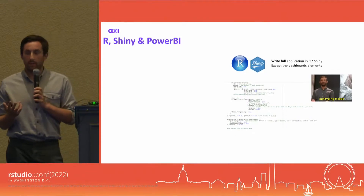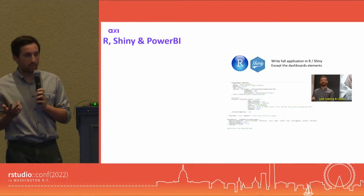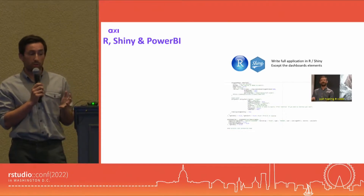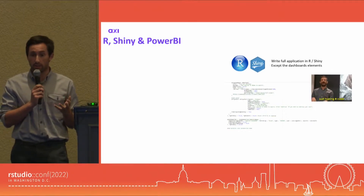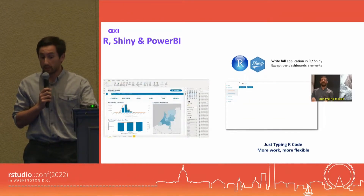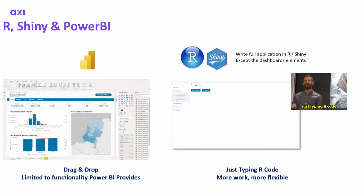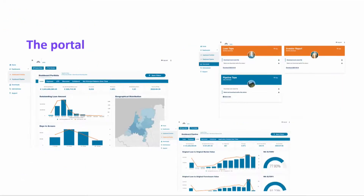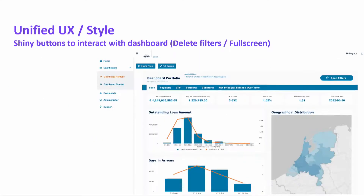But how does embedding a Power BI dashboard work exactly? First, you write the application structure in R and Shiny. Then you use Power BI's drag-and-drop features to create a nice-looking dashboard. Thereafter you embed the dashboard in a clean way into the app. This results in a portal with a unified UX and style, making it very difficult for customers to notice where the Power BI dashboard ends and the Shiny application begins.